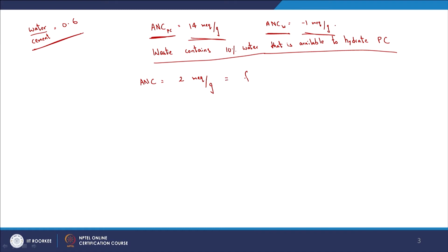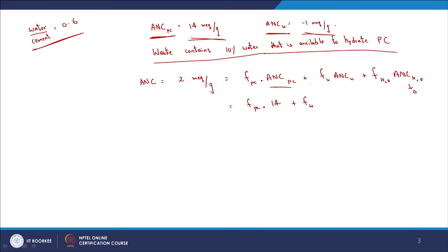The first equation is: f_cement × ANC_cement + f_waste × ANC_waste + f_water × ANC_water = 2 meq/g. Assuming ANC of water equals zero, this becomes: f_cement × 14 + f_waste × (−1) = 2 milliequivalents per gram. All units are consistent since fractions are dimensionless and ANC is in meq/g.